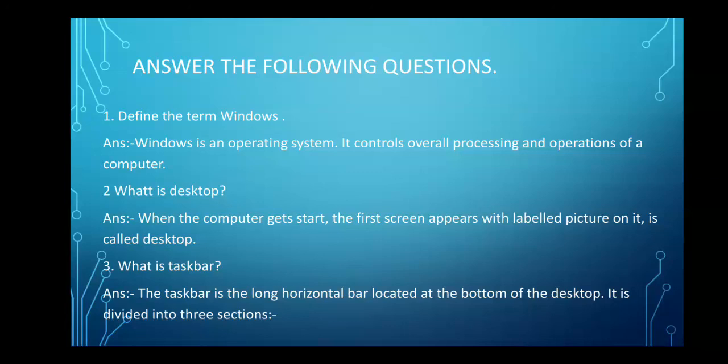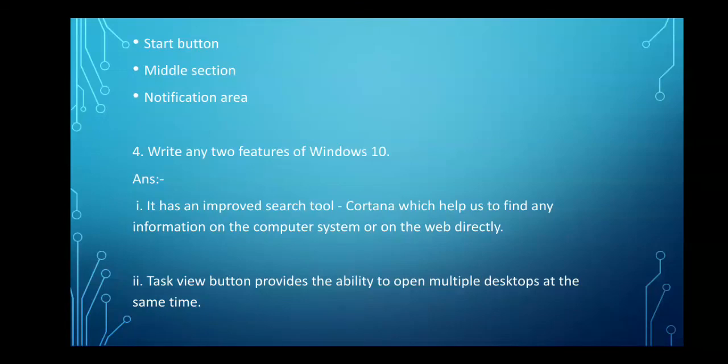The taskbar is a long horizontal bar located at the bottom of the desktop. It is divided into three sections. Start button in the left side, middle section in the middle area and notification area in the right side where we get all the notification related to the system.